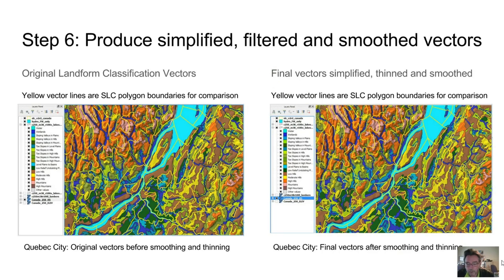In step 6, we used the functionality available in GRASS GIS to first convert our smoothed and simplified raster grid of landform classes into vector polygons. We then built a clean vector topological structure for all polygons, removed and dissolved any remaining small polygons below a minimum acceptable area, and finally smoothed and thinned the new vector polygons to remove unneeded vertices and to produce a more aesthetically pleasing set of polygons with a smaller file size. The yellow lines in this example display the existing SLC polygons and permit a visual comparison of the new polygon fabric to existing SLC polygons.